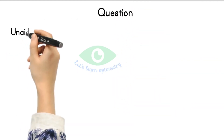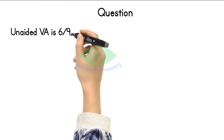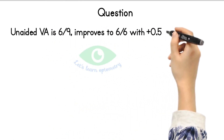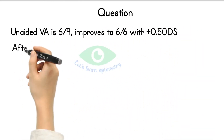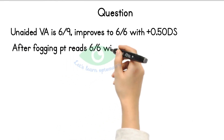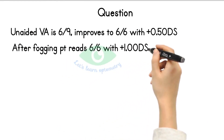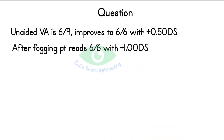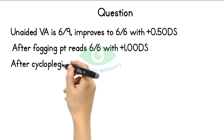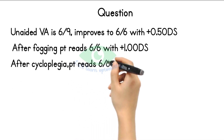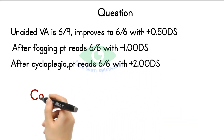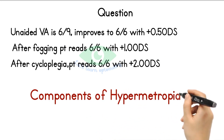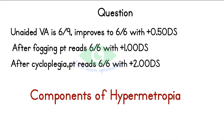Here is a practice question. The patient has an unaided visual acuity of 6/9, which improves to 6/6 with +0.5 D spherical. After fogging, the patient reads 6/6 with +1.0 D spherical. After cycloplegic refraction, the patient reads 6/6 with +2.0 D spherical. How do you find each component of hypermetropia?